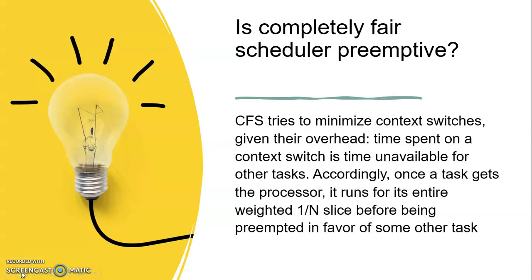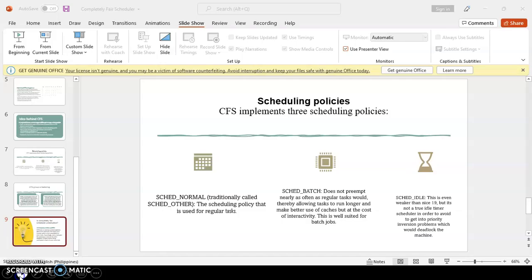Is CFS preemptive? CFS tries to minimize context switches given their overhead — time spent on context switching is time unavailable for other tasks. Accordingly, once a task gets the processor, it runs for an entire 1/N weight slice before being preempted in favor of another task. In summary, CFS handles CPU resource allocation for executing processes and aims to maximize overall CPU utilization while also maximizing interactive performance. Thank you.